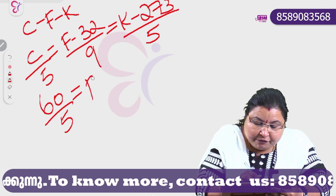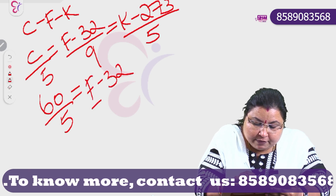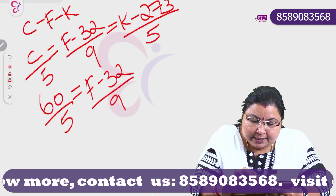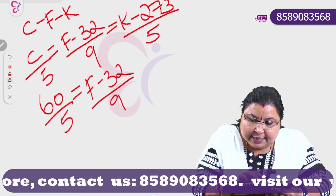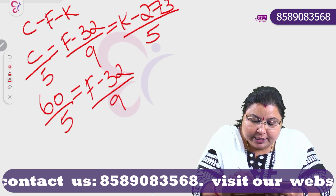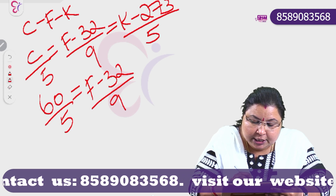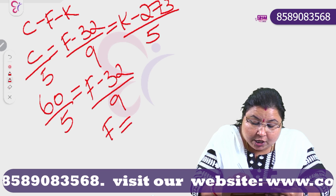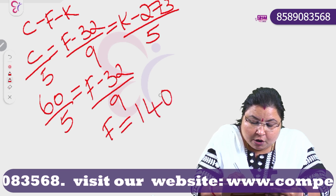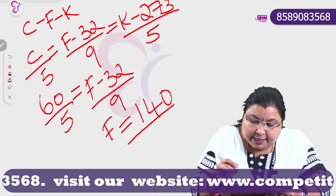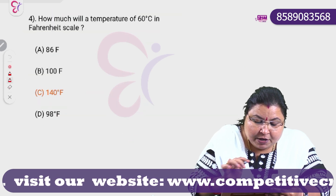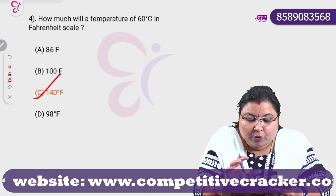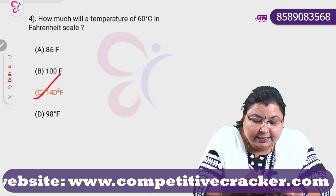The formula is C divided by 5 is equal to F minus 32 divided by 9. Substituting: 60 divided by 5 is equal to F minus 32 divided by 9. Solving, F is equal to 140. Option C is the correct answer — 140 Fahrenheit.